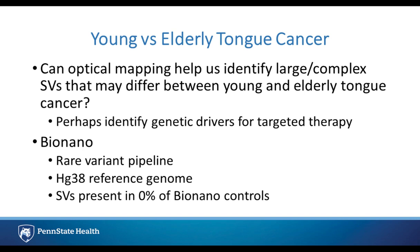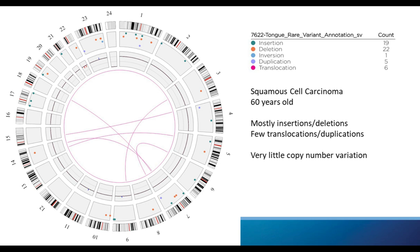The question I wanted to ask is whether I could use optical mapping with BioNano to help identify large complex structural variants that may differ between young and elderly tongue cancer. Sequencing is quite good at detecting smaller events, but for larger and more complex structural variants it can sometimes miss them or be hard to interpret. Using this different technology, you get a different view of the cancer, and perhaps we can identify genetic drivers that can improve our therapies. For the genome imaging I'll show, these use a rare variant pipeline with about 300X coverage and the HG38 reference genome.